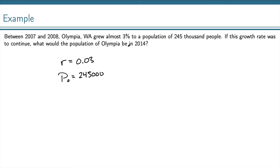To find the population in 2014, we're looking for P sub 6, because that is 6 years after 2008. So using our explicit model for exponential growth,